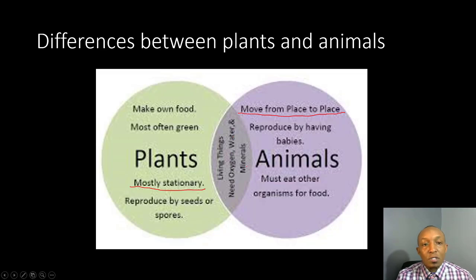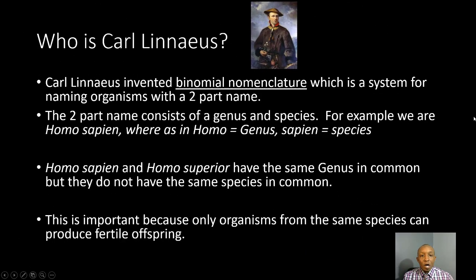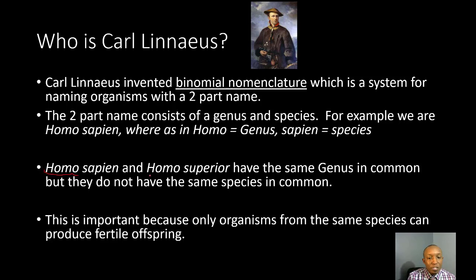So who is Carl Linnaeus? Carl Linnaeus invented binomial nomenclature, which is a system for naming organisms with a two-part name. The two-part name consists of a genus and species. For example, we are Homo sapiens, where Homo is the genus and sapiens is the species. Homo sapiens and Homo superior have the same genus in common, but they do not have the same species. This is important because only organisms from the same species can produce fertile offspring — offspring that are able to produce other offspring.